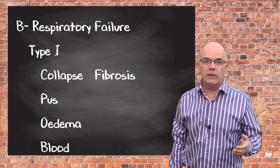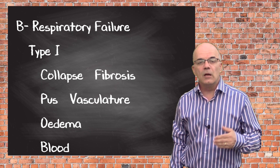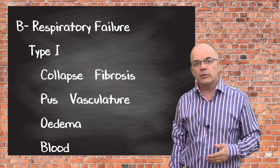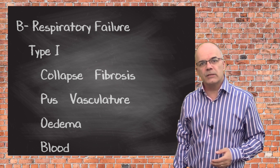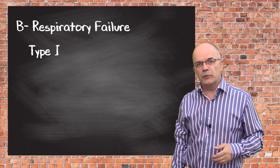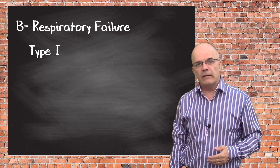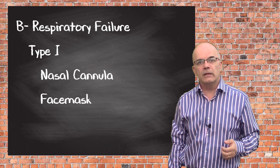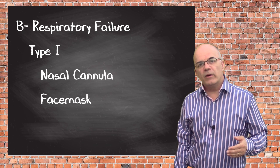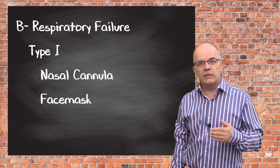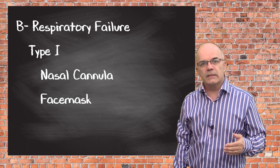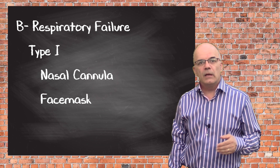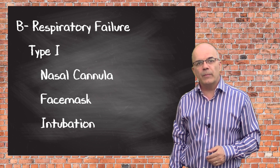Type 1 failure could also be caused by a problem with the vasculature within the lungs, caused by, for example, a pulmonary embolism or pulmonary hypertension, both of which would make gas exchange more difficult. Low oxygen levels can initially be managed by delivering oxygen via nasal cannula or face masks. However, if the situation continues to deteriorate and the patient begins to tire, mechanical ventilation is often the next step, which will then require intubation of the patient.